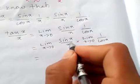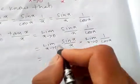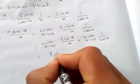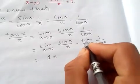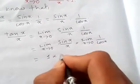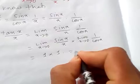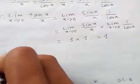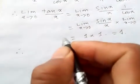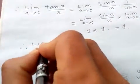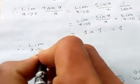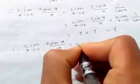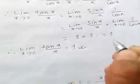The limit as x tends to 0 of sin(x) by x is just 1, and the limit as x tends to 0 of cos(x) is just 1, so 1 over 1 equals 1. Therefore, the limit as x tends to 0 of tan(x) by x is equal to 1. Hence proved.